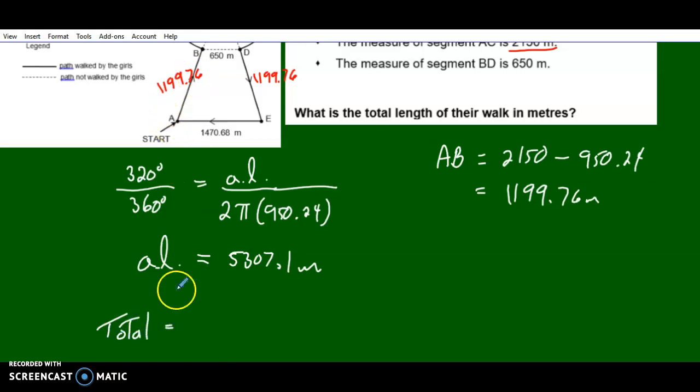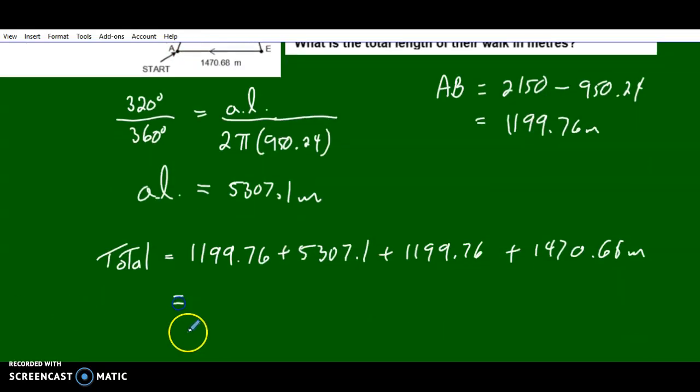Total distance is 1199.76 plus the arc length, 5307.1, plus 1199.76 again, plus 1470.68 meters. When we add all that up, we get a total of 9177.3 meters, which is approximately 9.2 kilometers.